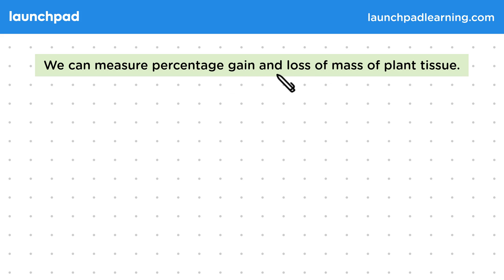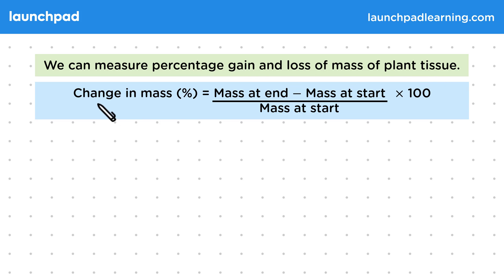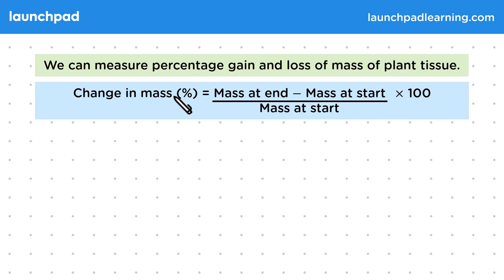We can measure percentage gain and loss of mass of plant tissue. The change in mass as a percentage equals the mass at the end minus the mass at the start, divided by mass at the start, multiplied by 100. The change in mass can be positive or negative depending on whether mass was gained or lost. You need to memorise this formula for your exam.